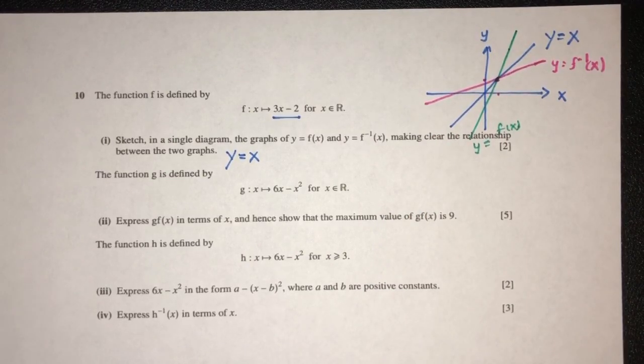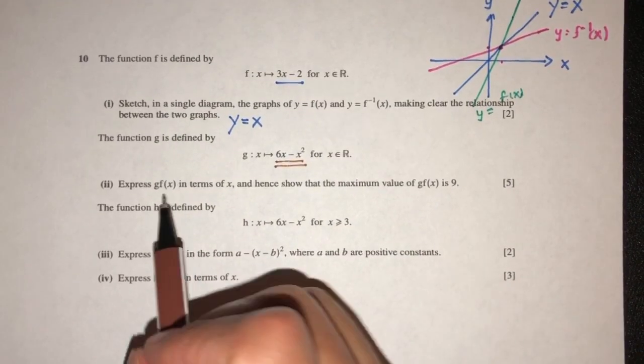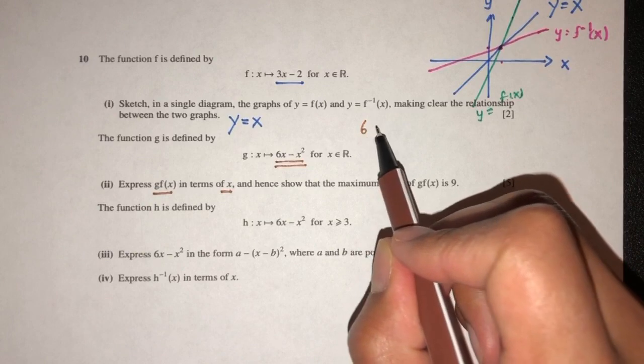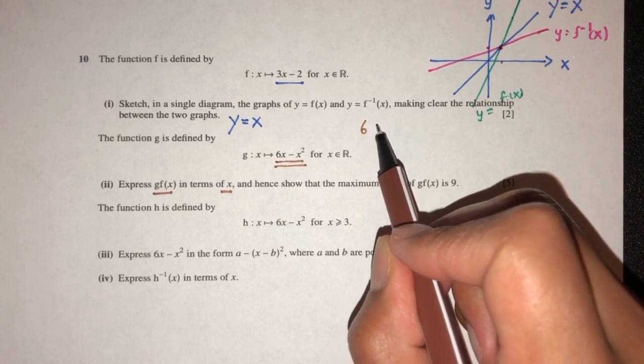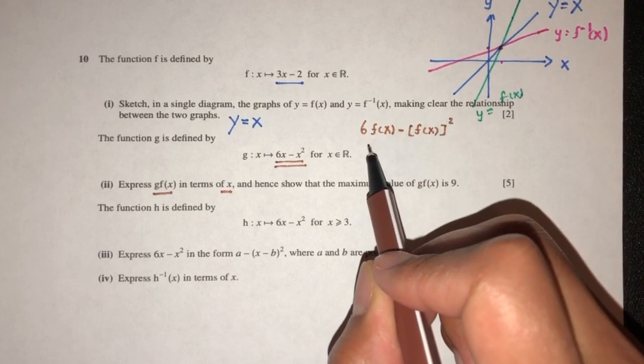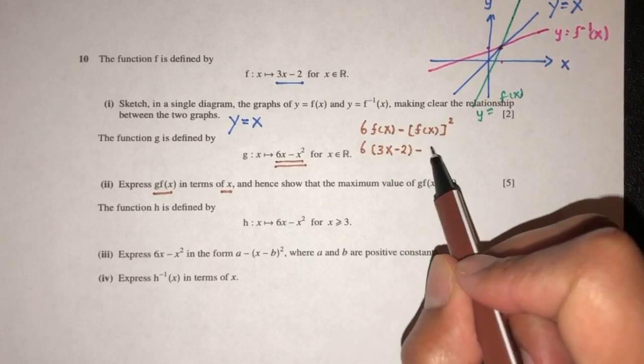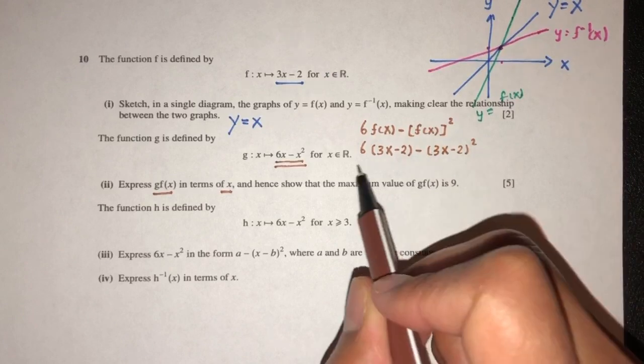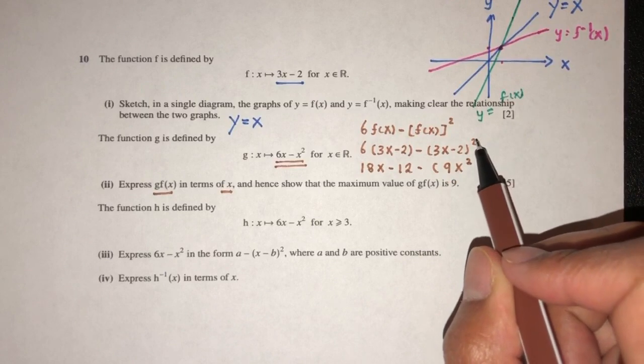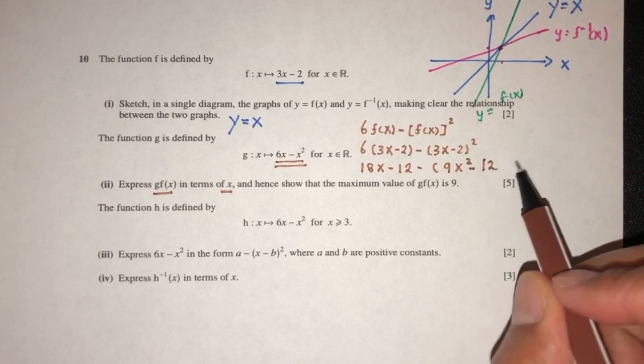Now for part two, we have g(x) is this. We have to express g(x) in terms of x, so let's do that. g(x) will be 6f(x) minus [f(x)]^2. That will be 6 times f(x) is 3x minus 2, minus (3x minus 2)^2. That will be 18x minus 12, minus 9x^2. That will be 2 times 3 will be 6, times 2 will be minus 12, plus 4.